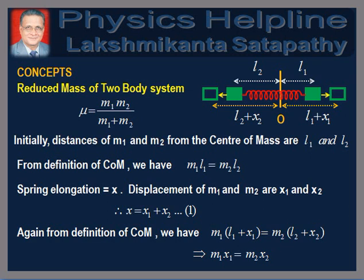It may be understood as follows. Initially, let the distances of the masses M1 and M2 from the center of mass O of the system be L1 and L2 respectively. Then by definition of center of mass, we have M1·L1 = M2·L2. When the blocks are pulled apart and released, let the elongation of the spring be X. If X1 and X2 are the displacements of masses M1 and M2, then X = X1 + X2.